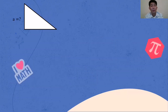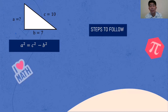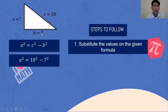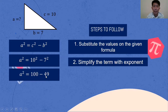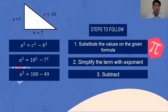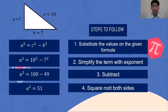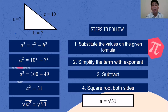Let's try another example. We are going to find side A, where B is 7 and C is 10. The formula to use is A squared equals C squared minus B squared. Step one: substitute the values — C is 10 and B is 7. Step two: simplify the exponents. 10 times 10 is 100, and 7 times 7 is 49. Step three: subtract — 100 minus 49 is 51. Step four: square root both sides. The square root of A squared equals the square root of 51. So A is equal to the square root of 51.